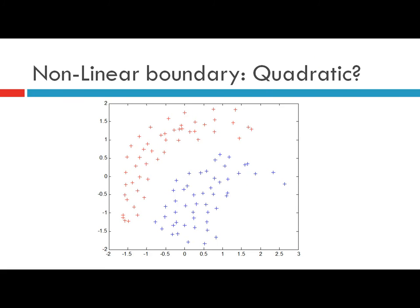The complexity increases as the data set becomes non-separable. Here, two classes — one represented by the red crosses and the other by the blue crosses — definitely cannot be separated by a linear boundary. Therefore, we think of polynomial basis functions, but what kind and what should be the degree? It seems like quadratic basis functions will separate the two classes — a curve drawn like this can separate them.